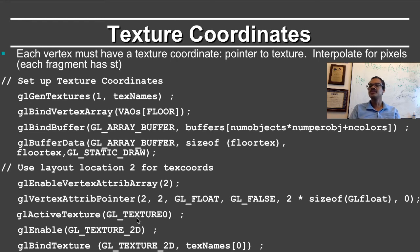You also need to define an active texture, which is texture 0 in this case. You need to enable texturing and bind to GL_TEXTURE_2D these texNames 0. All of this setup is needed to be able to use the textures.